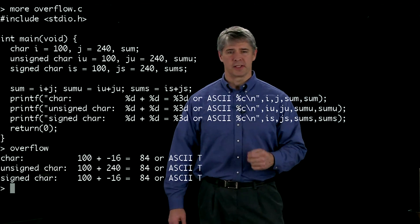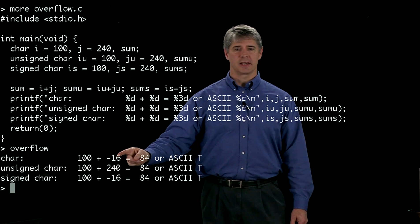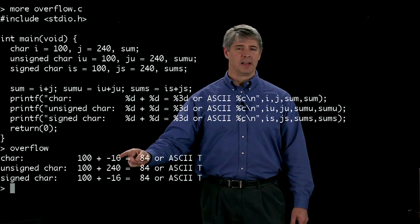The second thing we might notice is that even though we assign the value of j equal to 240, down here we can see it's got a value of minus 16. So why is that?